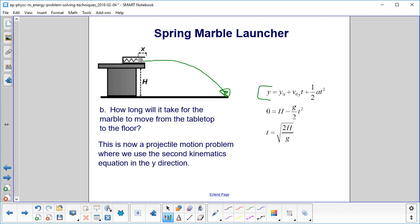Here's our second kinematics equation. Our initial height is h. There is no velocity in the y direction—don't make the mistake of putting in the x velocity there.